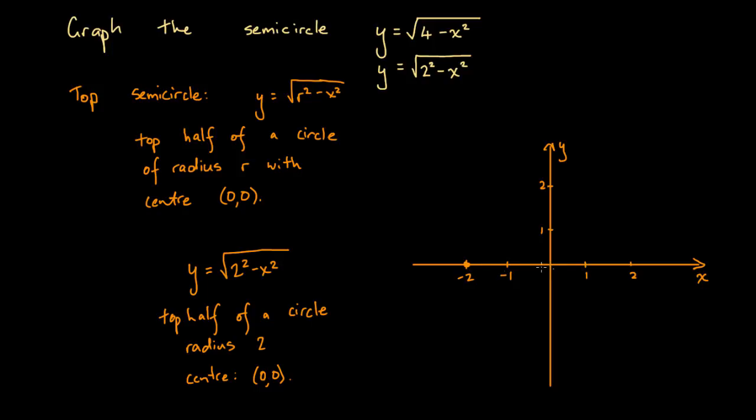So we've got our semicircle at the origin, it's the top half of the semicircle. The x-intercepts are going to be 2 units left and right of the origin, and 0 units up or down, and the y-intercept will be at 0 units left and right of the origin, and 2 units up at this point here.